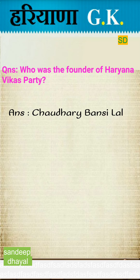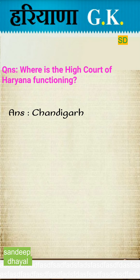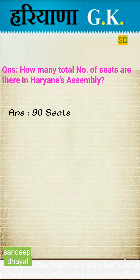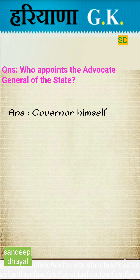Who was the founder of Haryana Jat Party? Answer: Chaudhary Vansilar. Where is the High Court of Haryana functioning? Answer: Chandigarh. How many total number of seats are there in Haryana's assembly? Answer: 90 seats.